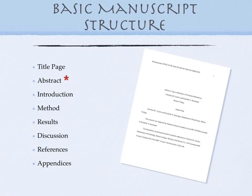Next comes the introduction, which usually includes the literature review, although some professors might want you to label the lit review with a separate heading. From the introduction, we move to the methods section, where you explain how the research is conducted. And if it is a finished study, you'll then move to the results section, followed by the discussion section. Finally, you'll list your references and any appendices, which could include copies of a survey or test you used, or other additional documents.